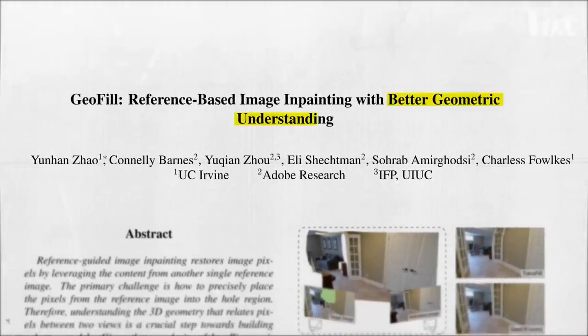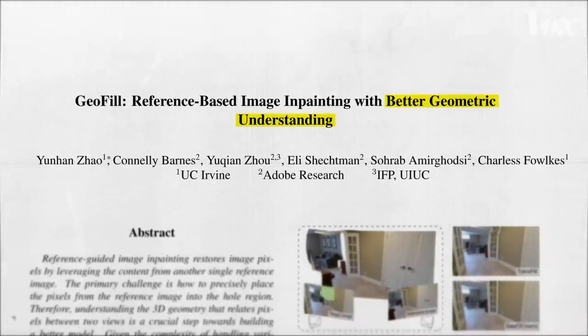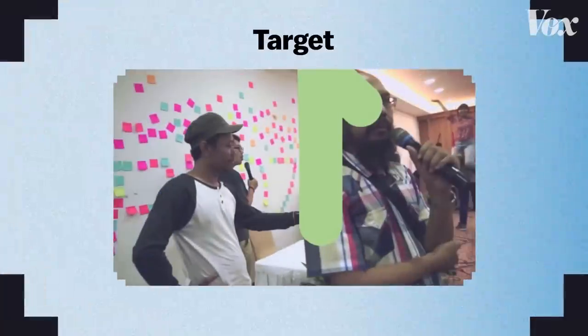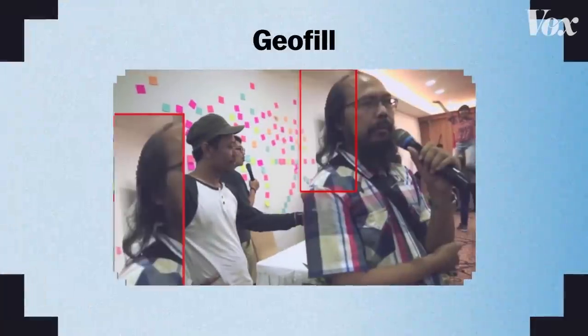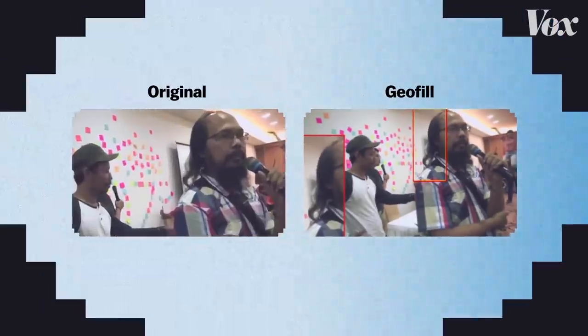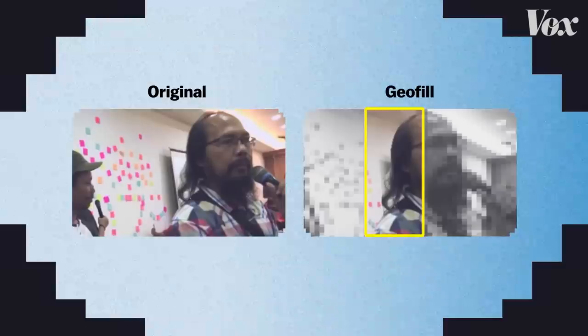Some researchers used the mannequin challenge not for training, but to grade how well their model did — it was ground truth to evaluate their experiment. One paper shows how to learn the geometry of a scene to fill in missing parts in photos. They took an image, painted out part of it, and then used their knowledge of the scene to fill it back in.